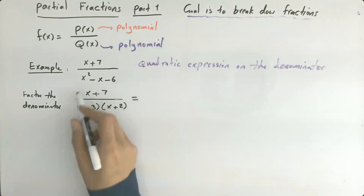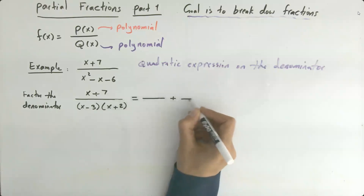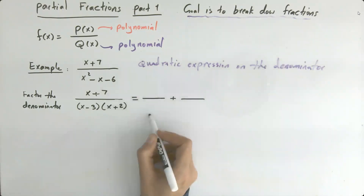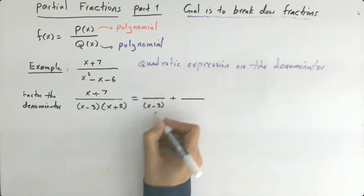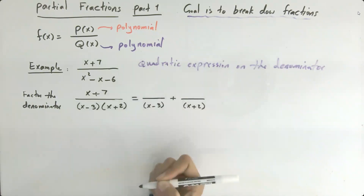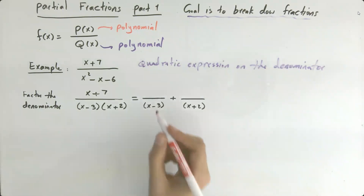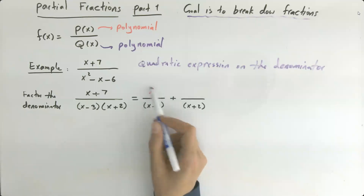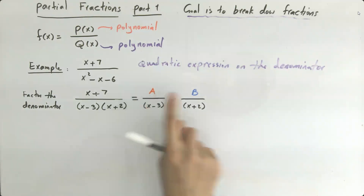Now we want to split this fraction into the sum of two fractions. Why the sum of two fractions? Because we have a quadratic expression on the denominator. The first fraction has one of the factors — x minus 3 — and the second fraction has the other factor, x plus 2. We don't know the numerators yet, so let us call them A and B, and use a system of equations to solve for them.